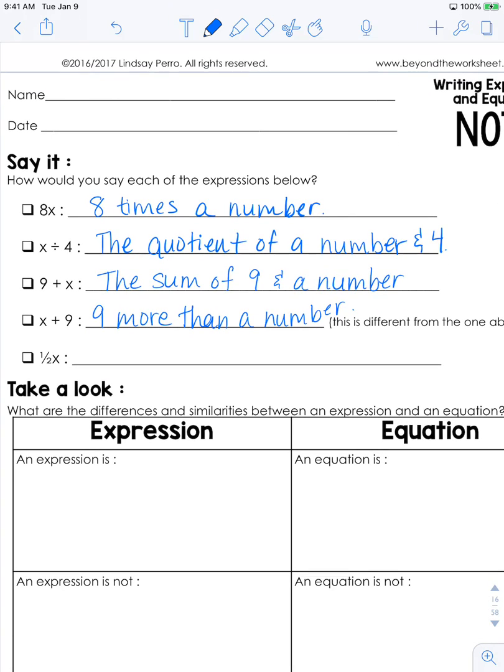One-half x can be read as half a number, and it could also be read as a number divided by 2, or the quotient of a number and 2, because when you take half of a number, you divide it by 2.